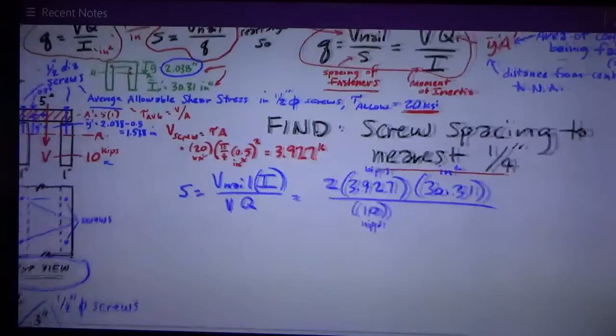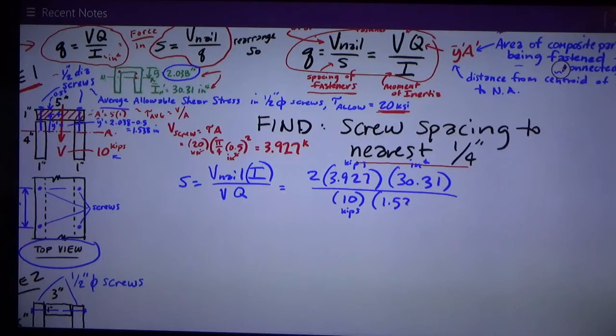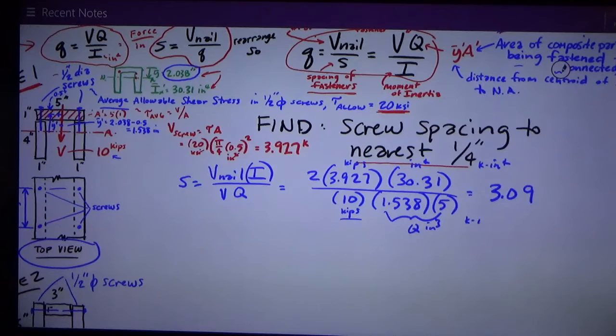Therefore, I can complete this calculation. Y bar prime is 1.538, which we just looked at. The area of the board is 5 square inches. So that is Q, and it's in inches cubed. So I do the math, and I come up with 3.09. Let's check our inches. I have kips on the top times inches to the fourth. So I have kip inches to the fourth. On the bottom, I have kips times inches cubed. I have kip inches cubed on the bottom. Kips cancel. Inches cubed cancels all but one of the inches on the top. And so I'm left with inches.